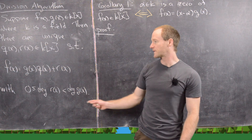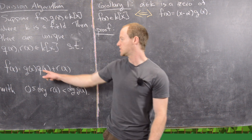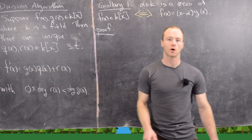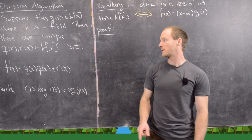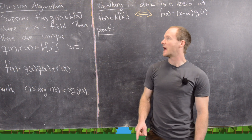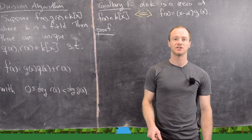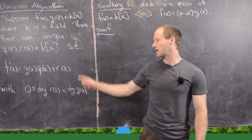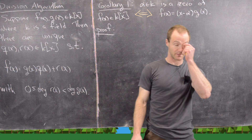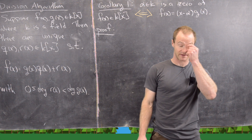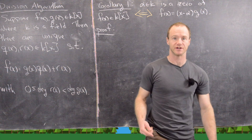Here q is the quotient of the polynomial f(x) divided by g(x), and r is the remainder after having taken that quotient.